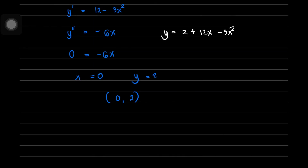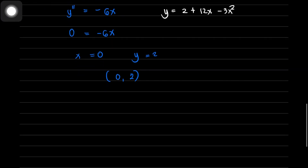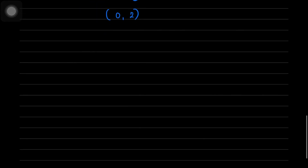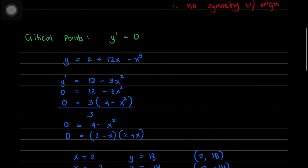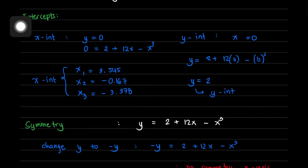The last step is to determine the behavior of the graph in each region. The number of regions depends on the number of x-intercepts. Since we have 3 x-intercepts, we will have 3 plus 1 equals 4 regions.